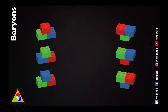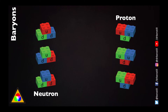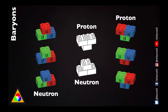The name baryon is given to any particle made from three quarks. Its origin is in the word 'barrios' in ancient Greek meaning heavy, because the first baryons to be discovered were the proton and the neutron — at the time they were the heaviest particles known, much heavier than the electron. A proton is made by putting two up quarks on top of a down quark, while the neutron is made by putting one up quark on top of two down quarks. It doesn't matter which of the quarks has what colour, as long as there is one red, one green and one blue.